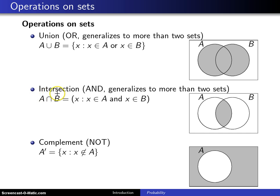The second operation is intersection, and when you hear intersection, you can think of the word and. This operator also generalizes to more than two sets. In the case of two sets, A intersect B is the set of all X such that X is an element of A and X is an element of B.